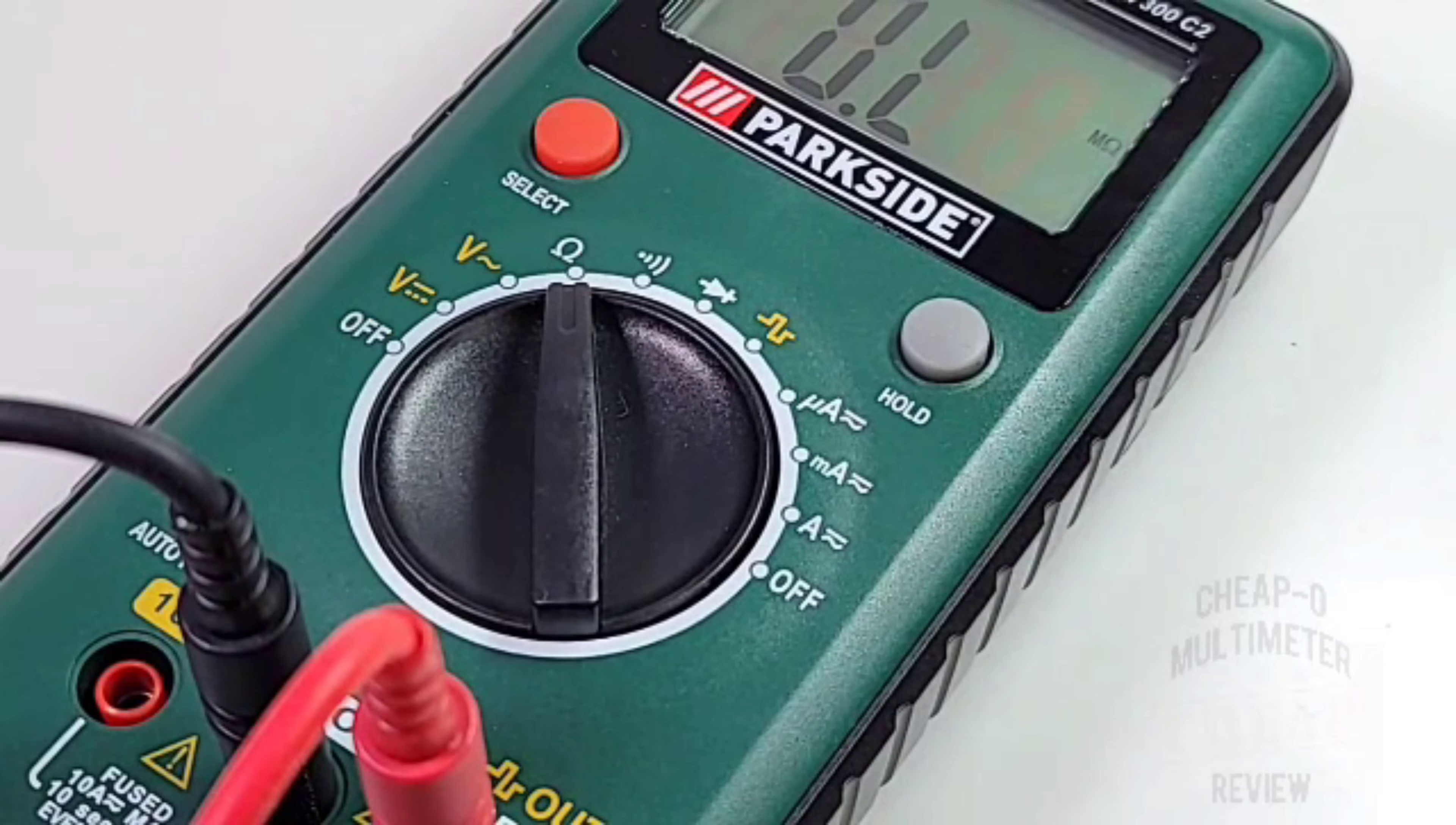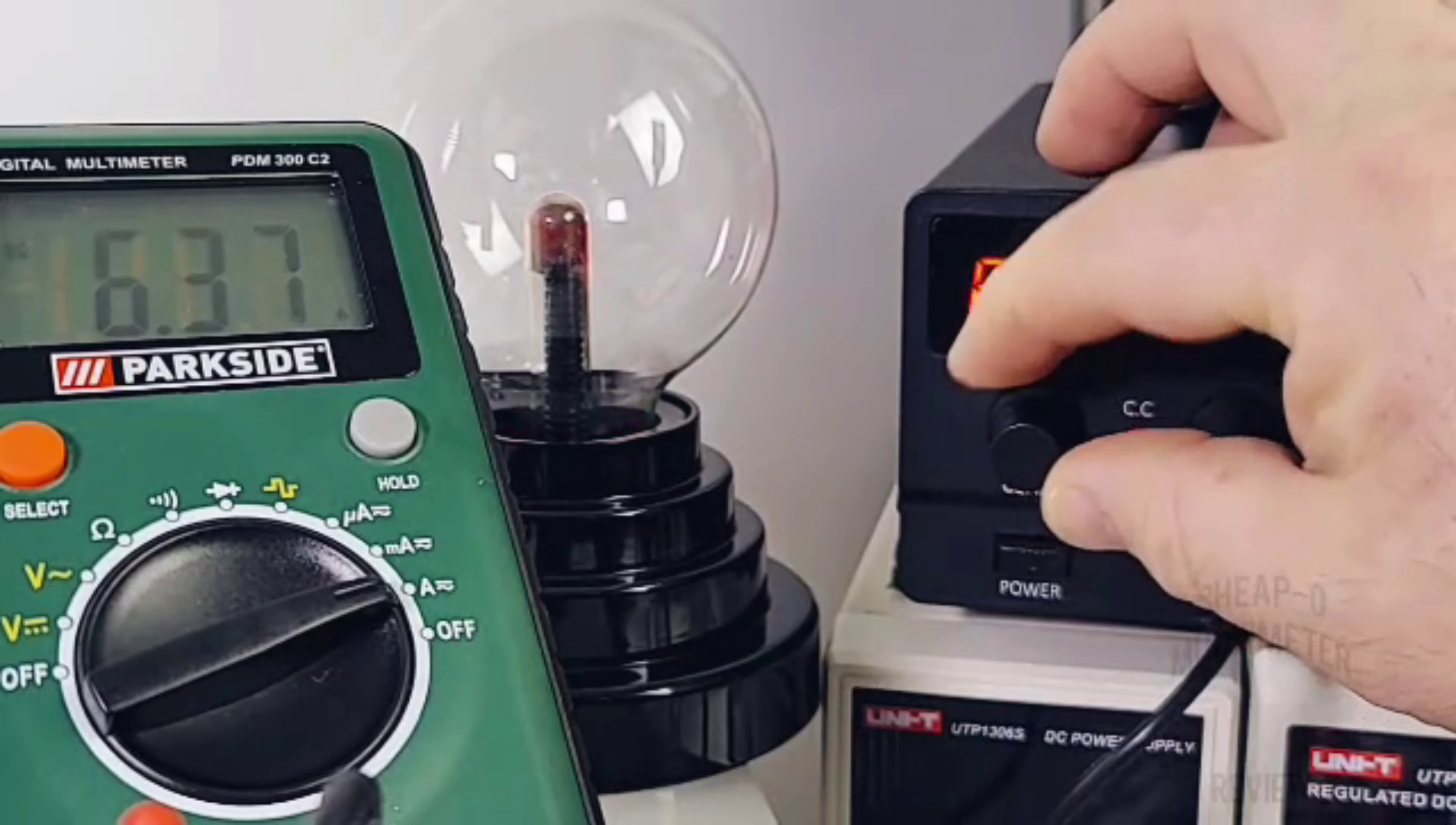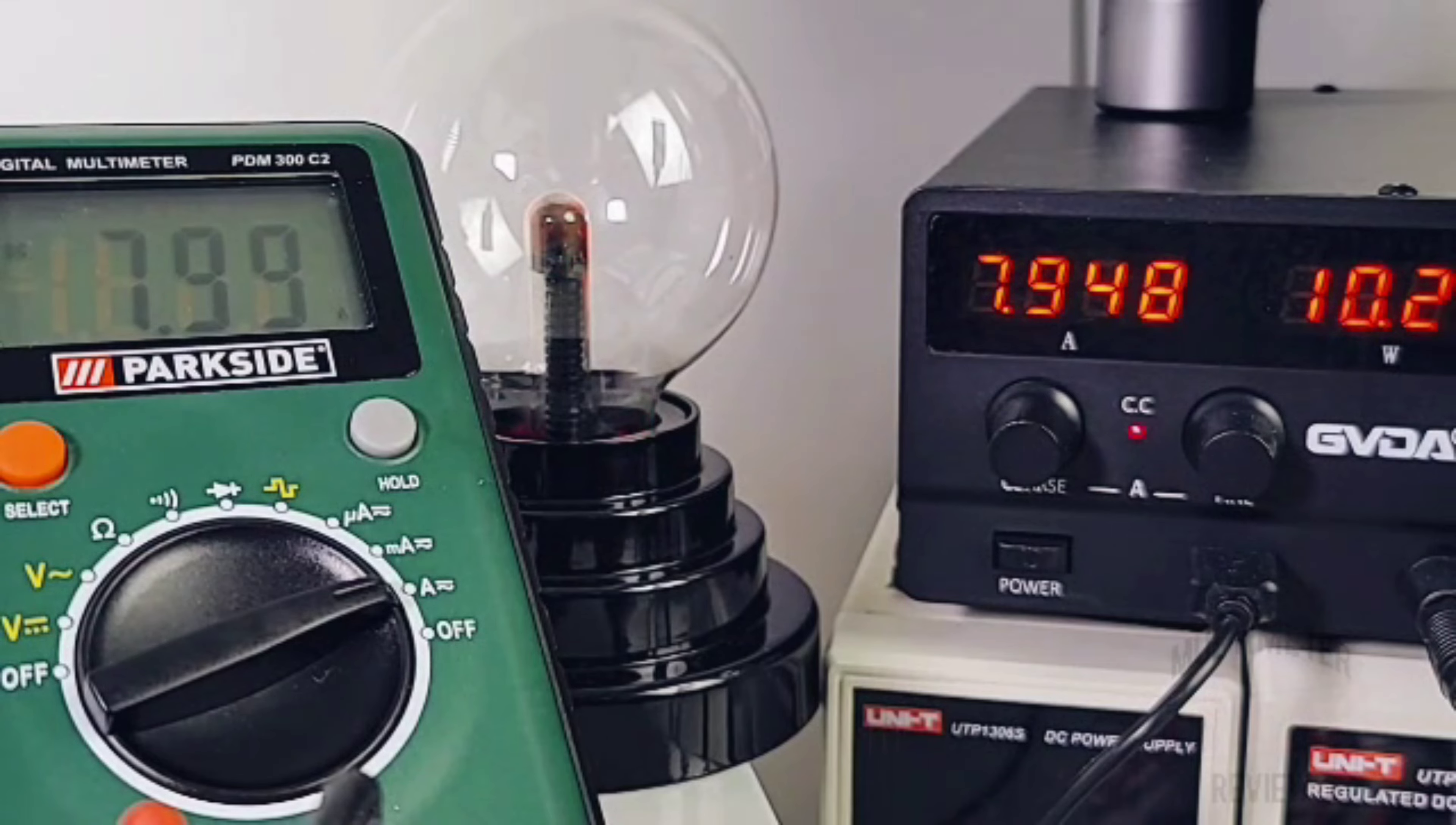Right now we're in high current mode sitting at 3.4 amps, no problem for the Parkside. Let's take it up: 5.3 amps coming up as 5.3. Let's max it out: 10 amps and we got a high current alarm. We don't see any annunciator but we do have that high current alarm, so good stuff. That turns off when you go below 10 amps.